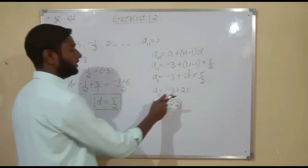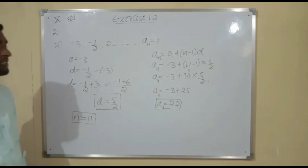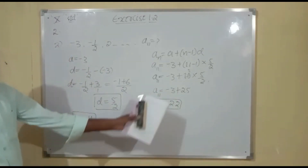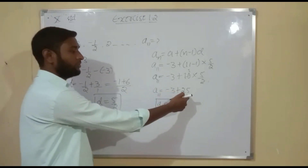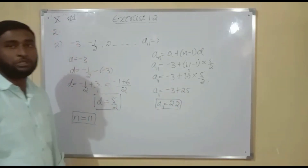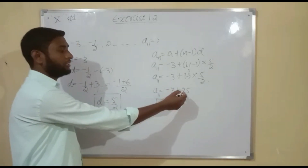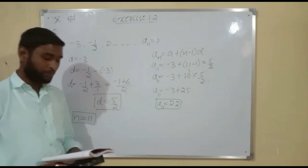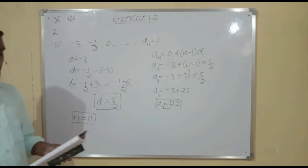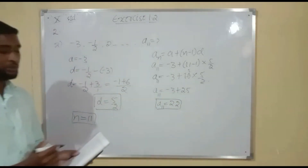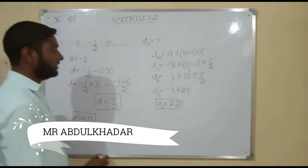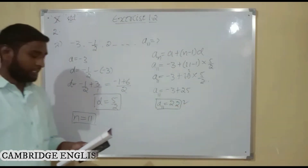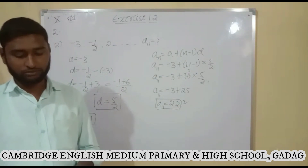So A11 is equal to 22. Looking at the options, option B is correct because option B is given as 22. So this is our correct answer. In the next class, we will solve the third problem.